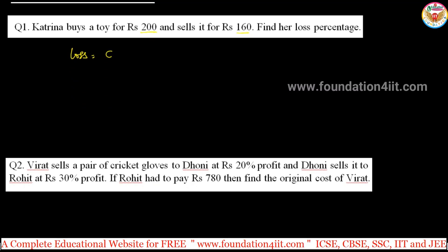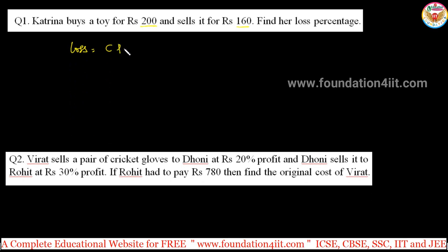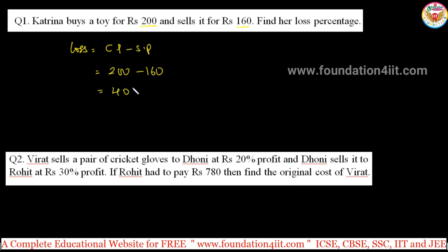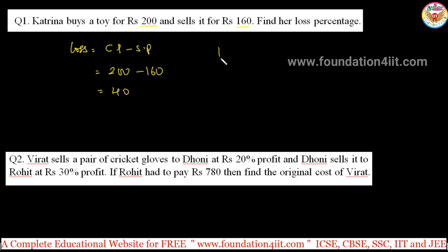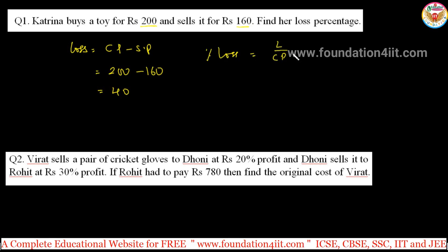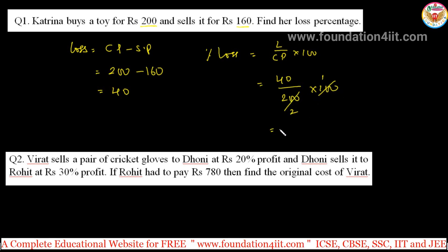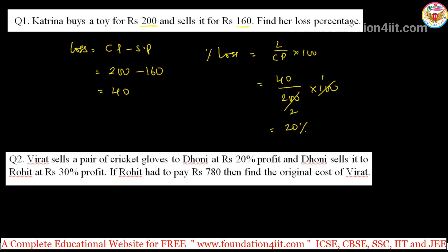For loss: since cost price is more, loss equals cost price minus selling price, that is 200 minus 160, so 40 rupees is the loss. They are asking for loss percentage. Loss percentage formula: loss by cost price into 100, so 40 by 200 into 100.